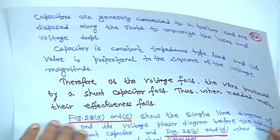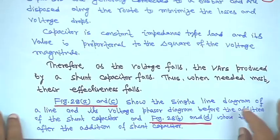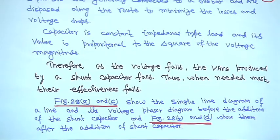A capacitor is basically a constant impedance type load — we will see this. The reactive power it injects is proportional to the square of the voltage magnitude at the point where it is connected.